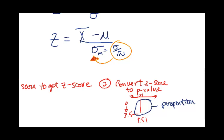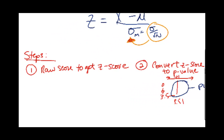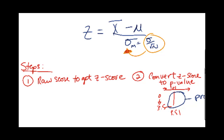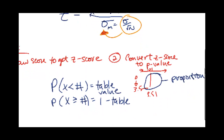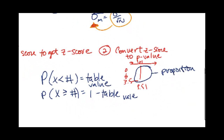Usually we can use this for hypothesis testing to make a conclusion. For now, all we need to know is how to find a probability that is less than a number — that's just the table value. If it's greater than or equal to a number, it's 1 minus the table value. And then there's the in-between two numbers case — that one's a little bit more complicated.